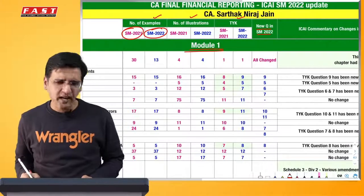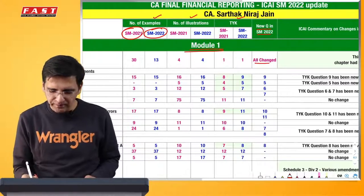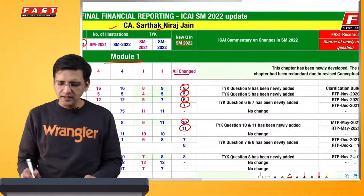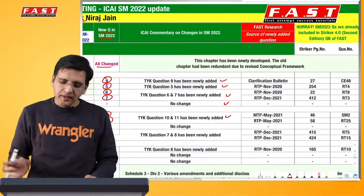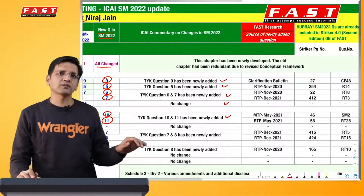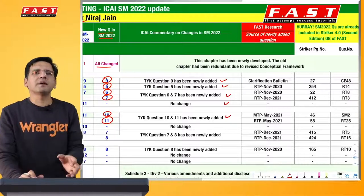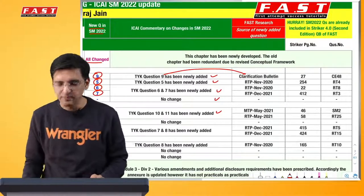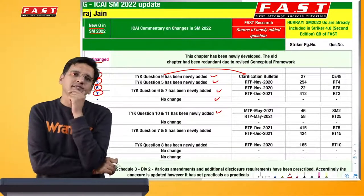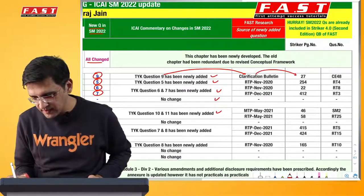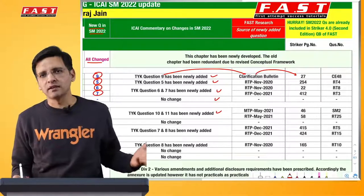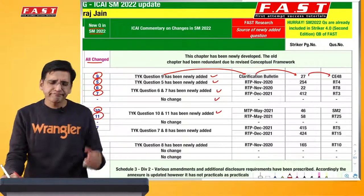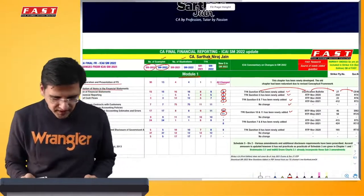Aur phir humne dekha ki kahan change hua hai, aur humne specifically aapko illustrations de diye - ki kahan kya change hua hai. Jaise ismein question number 9 change hua hai, yahan pe 5 number ka question nahi aa gaya, yahan pe 6 aur 7 number ke aa gaye, yahan 10 aur 11 number ke aa gaye. Aur aage aapko commentary de di - ki yeh yeh questions humne kya kiya hai, dekha hai ki yeh sab add hua hai. Yehi nahi, what we also did is - we did a research for the student of December 21, just to identify ki yeh questions kya naye question hain, vaaki yeh RTP/MTP ke hain jo student otherwise kar leta hai. To humne kya kiya - questions ka source identify kiya. To question number 9 humne dekha - institute ke clarification bulletin se pick kiya gaya. Aur yeh clarification bulletin se pick kiya gaya question - kya FAST ke material mein hai? Yeh to pichhle teen saalon se hamare material mein hai, and this has always been there in our material. Kyunki hum clarification bulletin ke bhi relevant questions apne students ke saath striker mein discuss karte hain. To yeh Striker 4.0 ka page number hai, aur yeh question number hai jismein yeh incorporated hai.